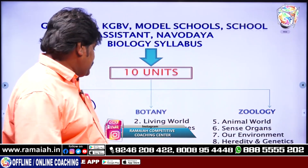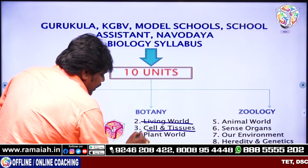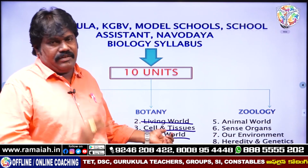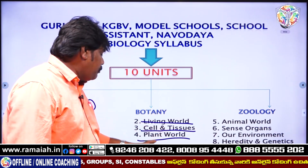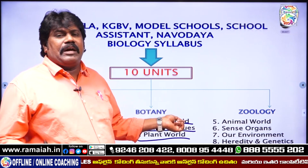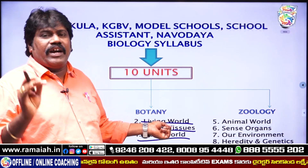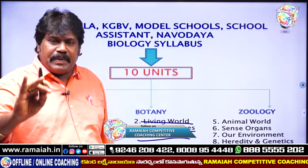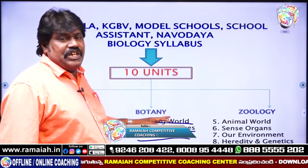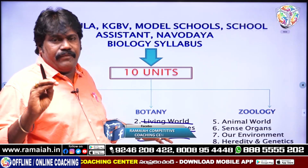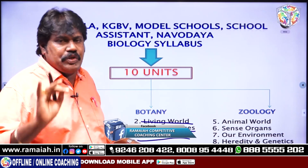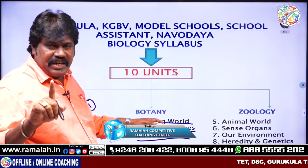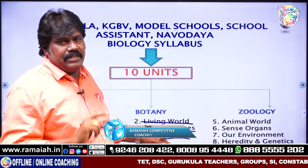The second unit is Living World, and then Cell and Tissues, and then Plant World. These three units are under Botany. In the Living World, some Zoology content is also present — that is the Classification of Zoology, meaning Kingdom Animalia. In Cell and Tissues, the types of animal cells and animal tissues are included. So in Living World one Zoology topic is present and in Cell and Tissues one Zoology topic is present.